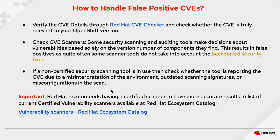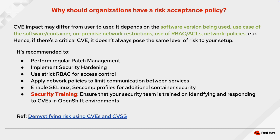Why should organizations have a risk acceptance policy? CVE impact may differ from user to user — it totally depends on the version of software being used. There might be additional network restrictions or strict RBAC rules due to which a CVE may not pose the same level of risk to your setup. It is always recommended to perform regular patch management, implement security hardening, use strict RBAC for access control, apply network policies to limit communication between services, and enable SELinux and Seccomp profiles for additional container-level security. Security training is also important to ensure your team is trained on identifying and responding to CVEs in an OpenShift environment.